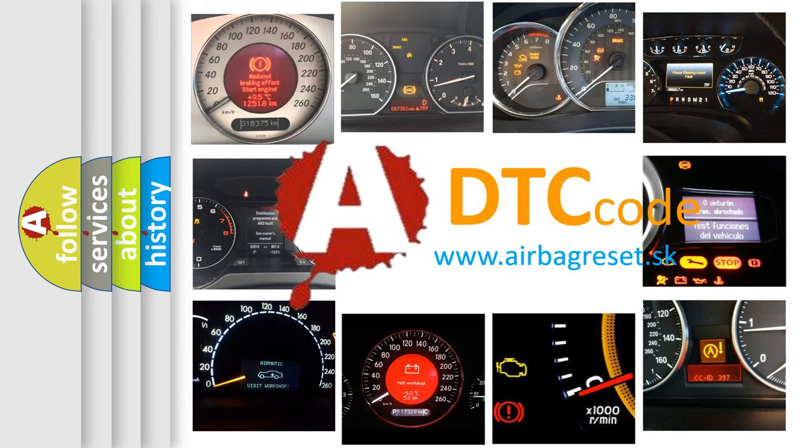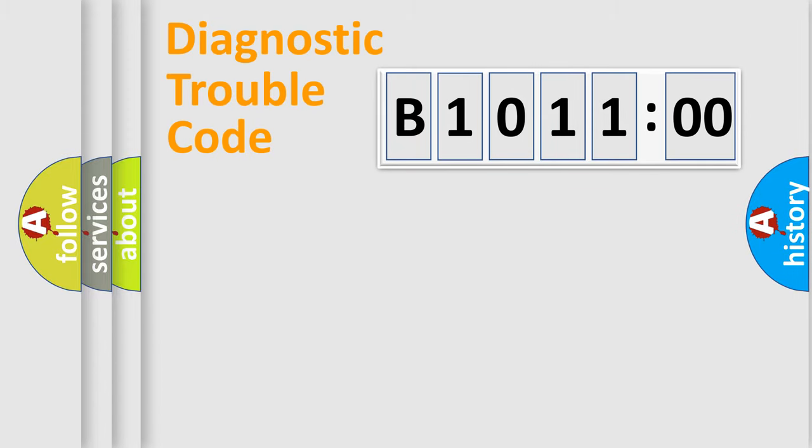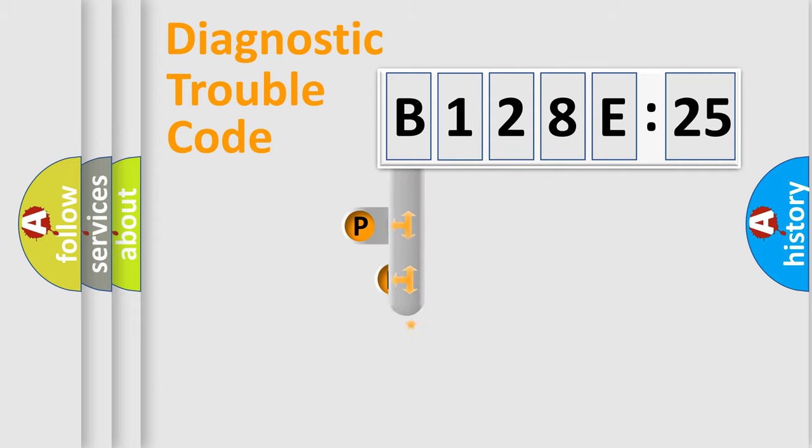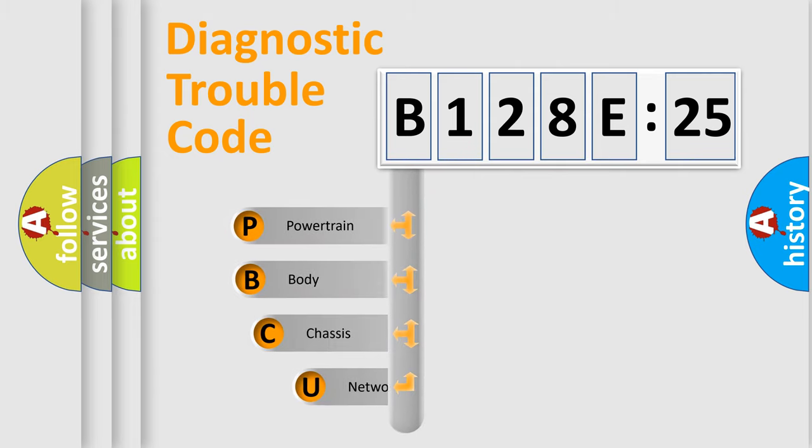We divide the electric system of automobile into four basic units: powertrain, body, chassis, and network. This distribution is defined in the first character code.